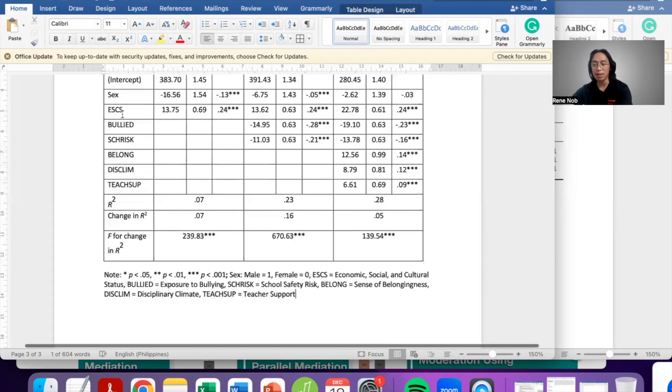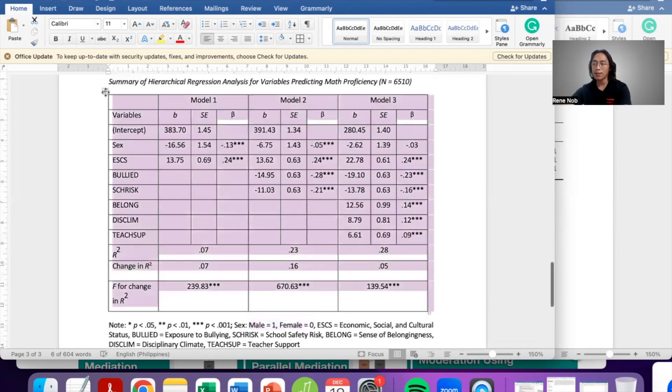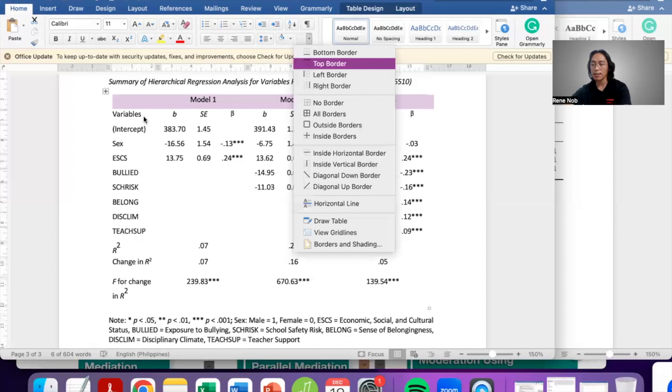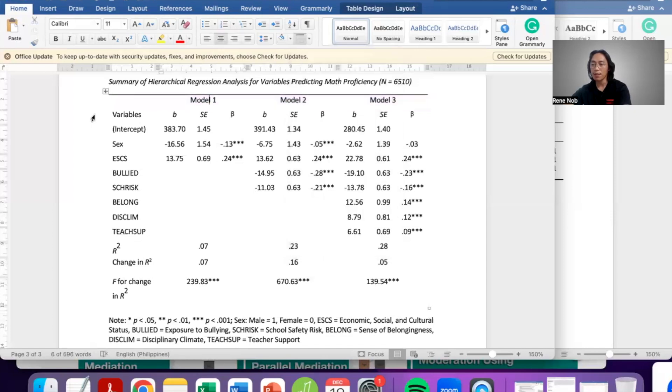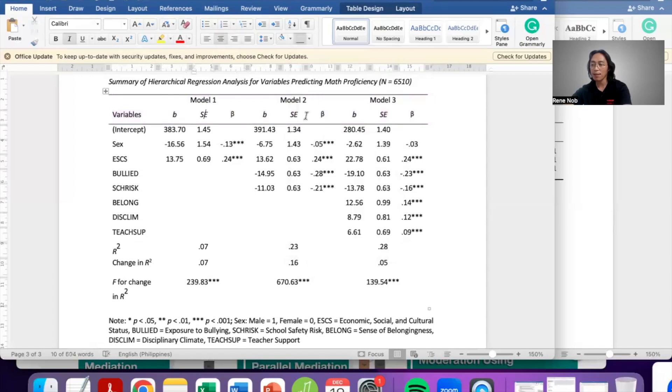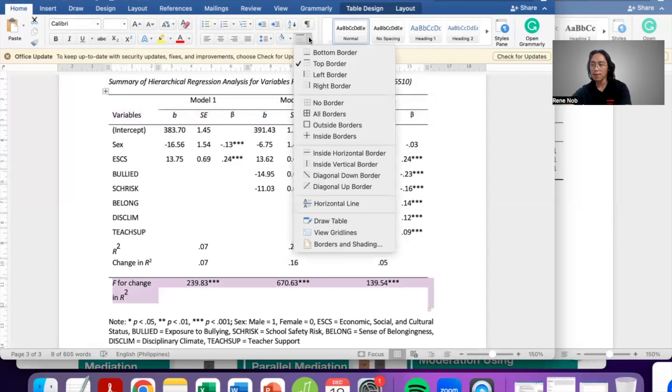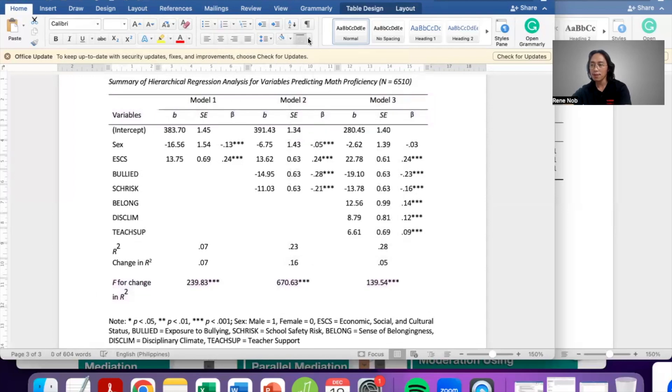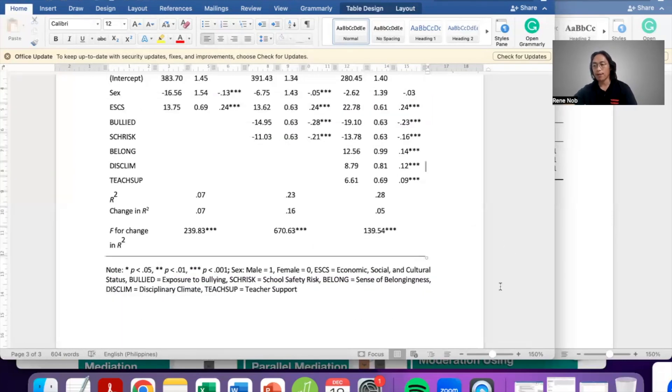Similarly, because I used shortened labels, I also identified what these are. For sex, which is a dichotomous variable, I also identified how I coded it: Male 1, female 0. And then, if we make this an open table like that.